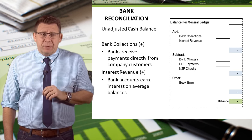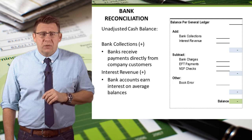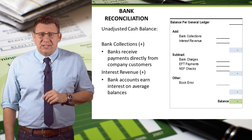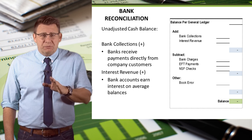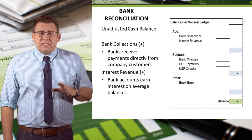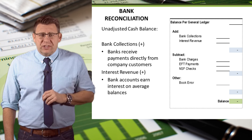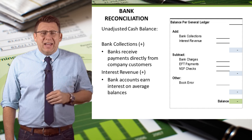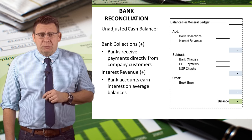Many companies have customer payments sent directly to the bank instead of the company. This improves internal controls over cash and speeds the collection process. If these collections were not recorded at the time of receipt, they need to be recorded at the end of the period. Some bank accounts earn interest, and often companies don't know how much interest they've earned until they receive a bank statement. Both of these items add to the book balance during the reconciliation process.